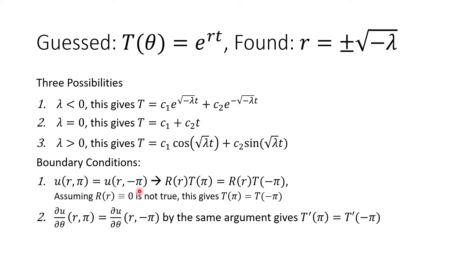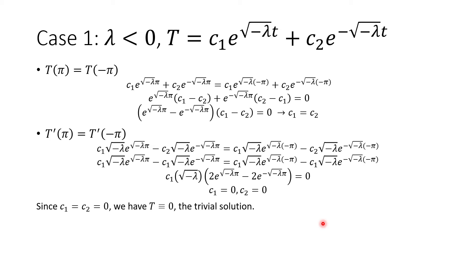Depending on the value of lambda, the solution for T looks different. If lambda is less than zero we have real roots and get a simple exponential form. If lambda equals zero we get c1 plus c2*T. If lambda is greater than zero we have complex roots, which turns it into cosines and sines. Applying the boundary conditions - u(r, pi) equals u(r, -pi) - we can divide by r and find T(pi) equals T(-pi), and T'(pi) equals T'(-pi). For the case lambda less than zero we end up with the trivial solution, which is not helpful for understanding long-term behavior, so we ignore it.